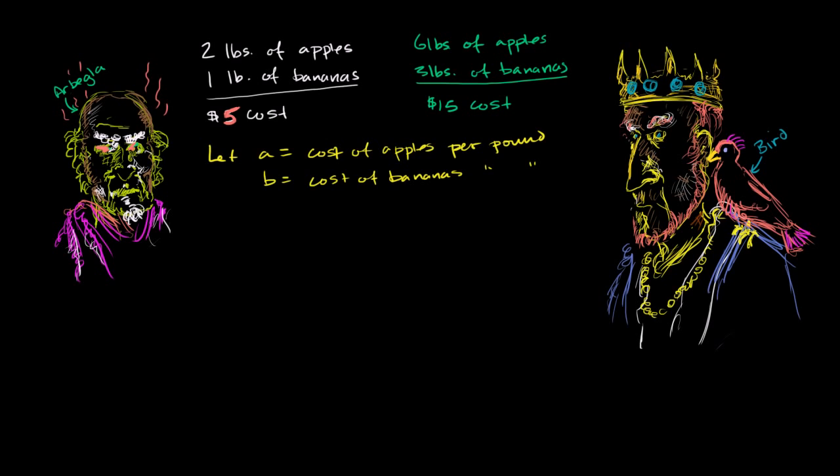Now, surely, considering how smart you and this bird seem to be, you surely could figure out what is the per pound cost of apples and what is the per pound cost of bananas. So you think for a little bit. Is there now going to be a solution?